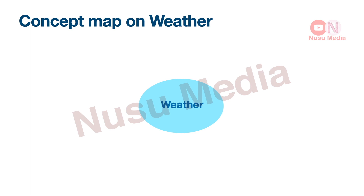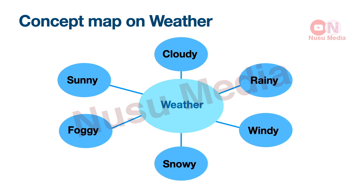What do we call it? Sunny. Cloudy. Clear. Windy. Snowy. This is the concept map.